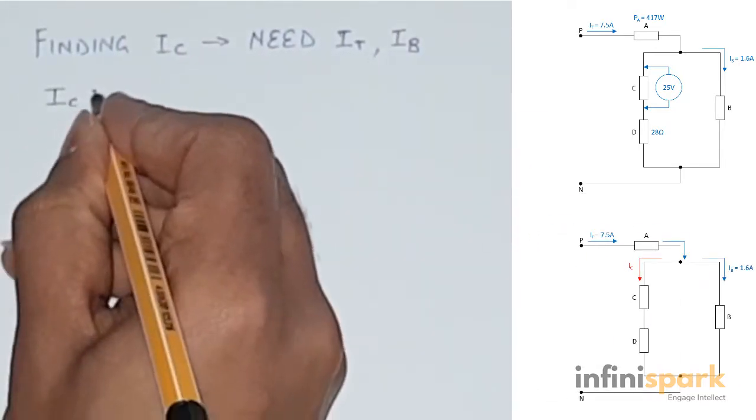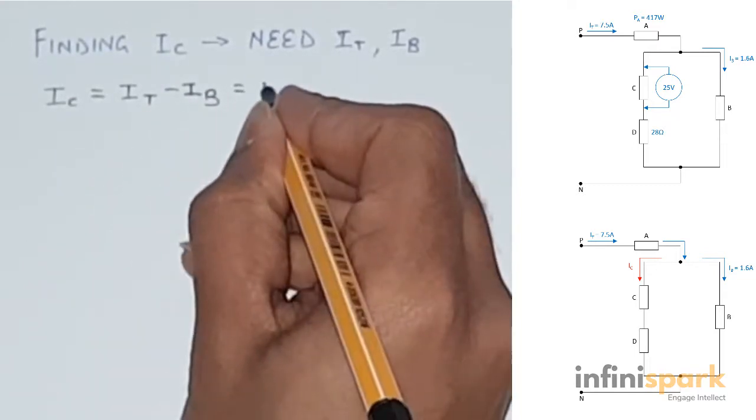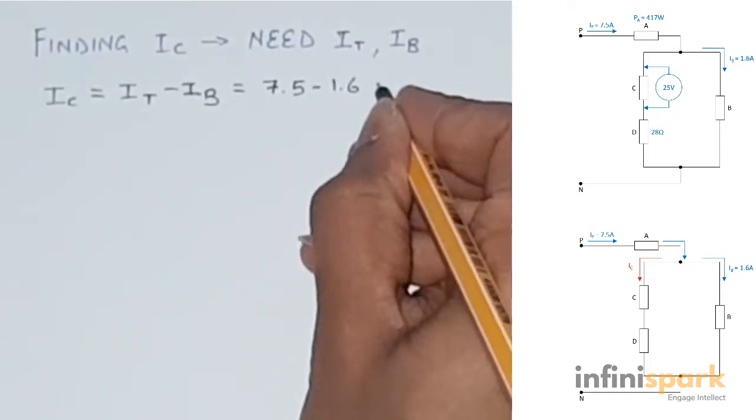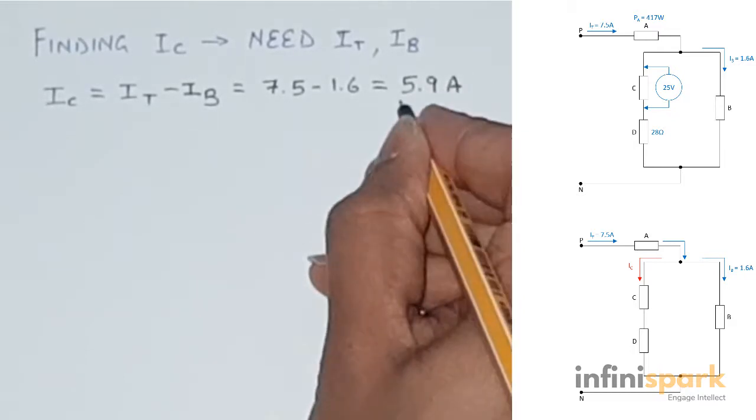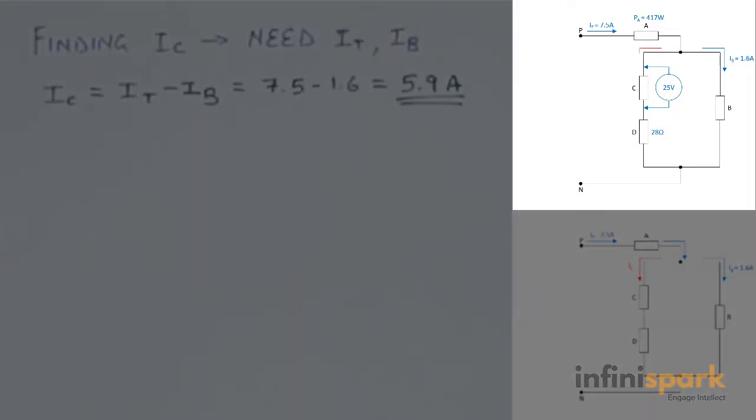So IC will be IT minus IB, or 7.5 minus 1.6, which will give us 5.9 amps. So the current through resistor C will be 5.9 amps.